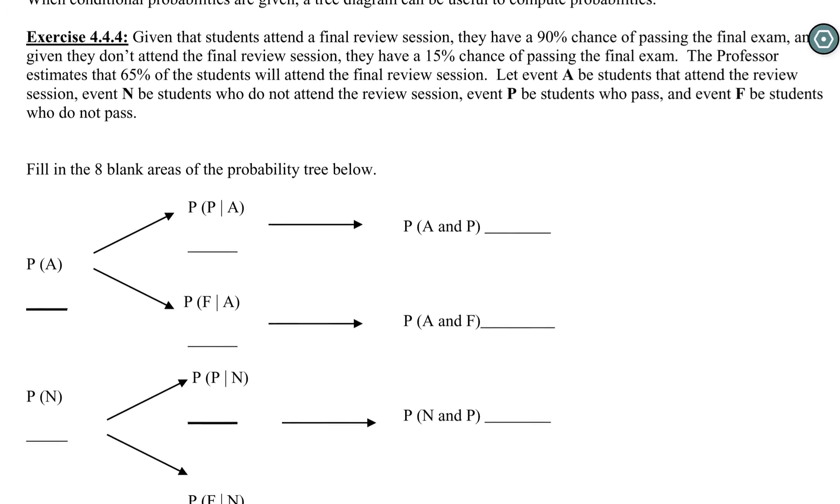The tree diagram allows us to go from marginals and conditionals to our ands, so it's different than our Venn diagram or contingency table which have ands and then allow us to find all the other probabilities. First thing we need to do is read through this question and translate what we have. We can see at the end they told us A is attend and N is not attending, P is passing and F is not passing. So instead of using the complement notation they just gave us a new letter, but it is the complement.